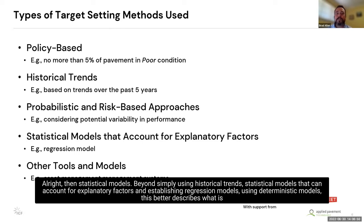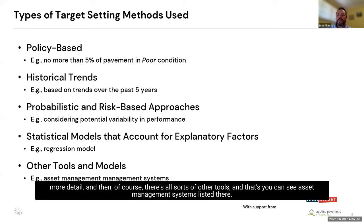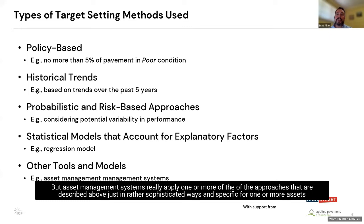Statistical models go beyond historical trends and can account for explanatory factors, establishing regression models. Using deterministic models better describes current practice for pavement management, where many factors contribute to pavement performance. Asset management systems apply one or more of these approaches in sophisticated ways specific to one or more assets.